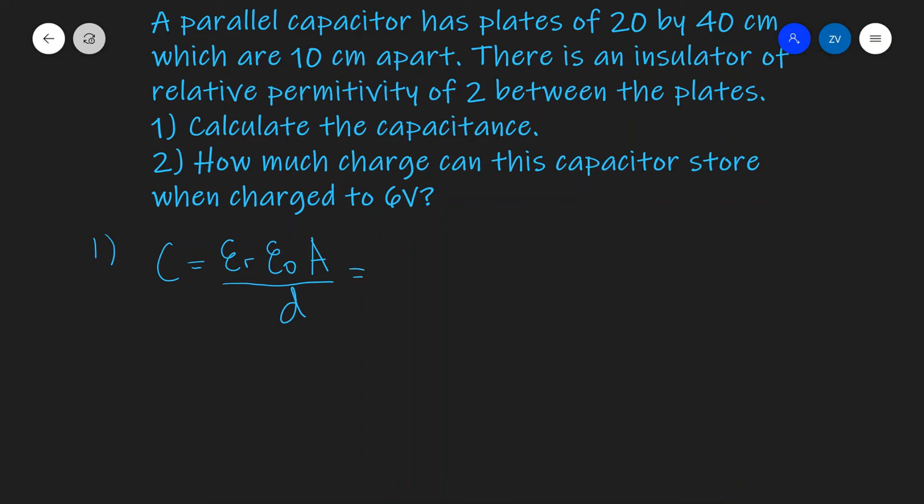Now my relative permittivity in this case is 2. E0 the permittivity of free space is given in the A-level formula booklets and you can also easily find it on the internet if you don't do A-level physics. So it'll be times 8.85 times 10 to the power of minus 12 multiplied by the area of the plates.